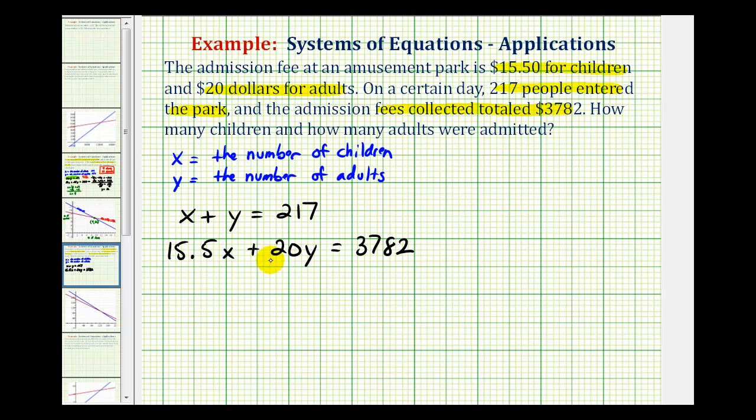So this is our system of equations. If we want to solve this algebraically, we can use the substitution method or the elimination method. Since we can solve this first equation here pretty easily for x or y, I think we'll use the substitution method. So if we subtract x on both sides of this first equation, we can rewrite this as y equals 217 minus x.